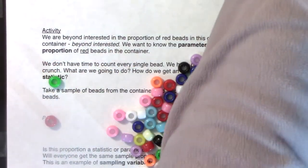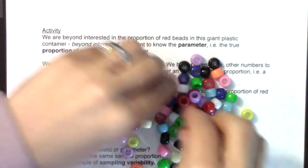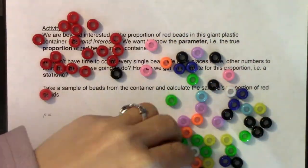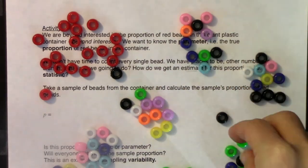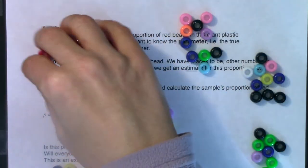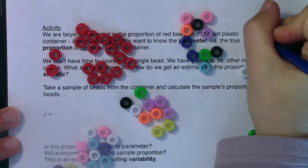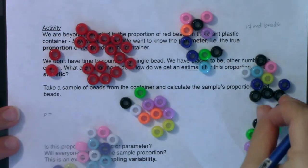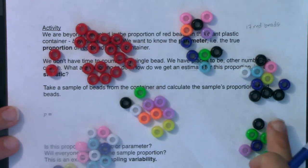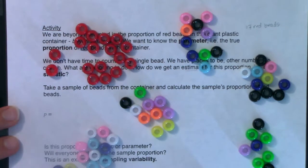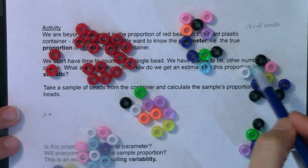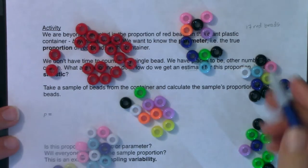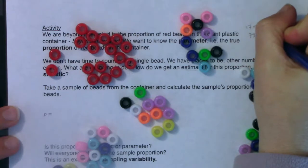Here we go. I lost one. Okay, so if I keep track, I have, I'm gonna write it up here, 17 red beads, and then I had one, two, three. I had ten, twenty, thirty, forty, fifty, sixty, seventy, eight, seventy-eight other beads.